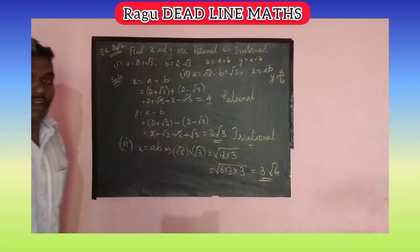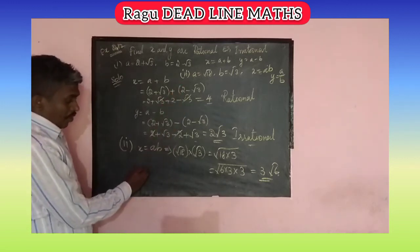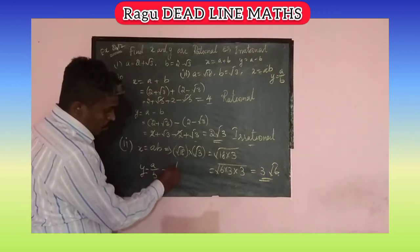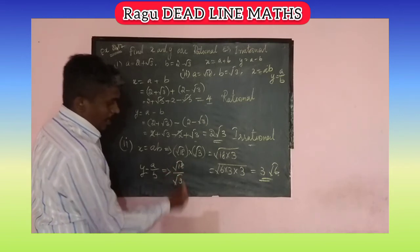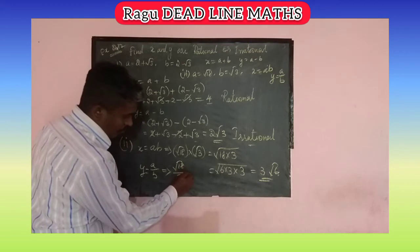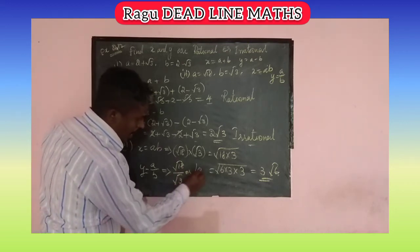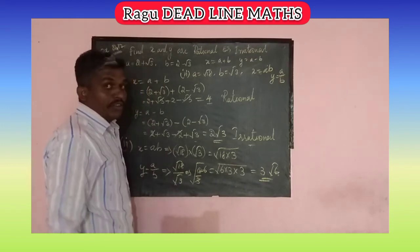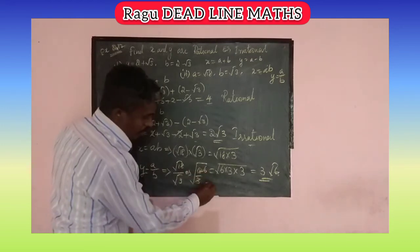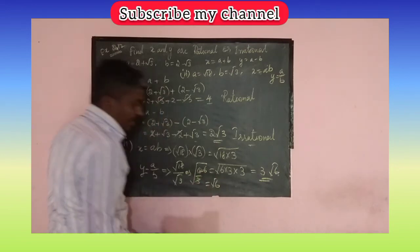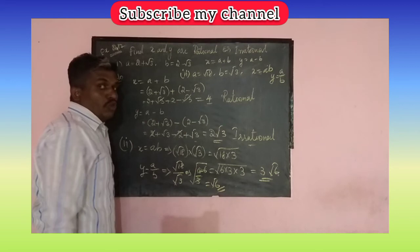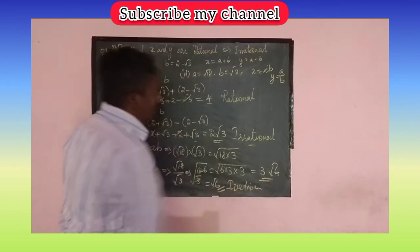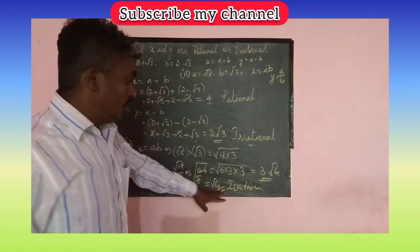For y equal to a divided by b: y equals square root of 18 divided by square root of 3, which equals square root of 18 over 3. Since 6 times 3 equals 18, this simplifies to square root of 6. We cannot simplify this further, so y is also an irrational number.